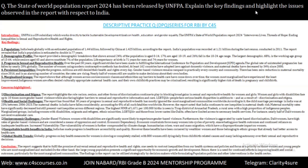The next point is about progress in sexual and reproductive health. Over the past 30 years, India and countries across the globe have made significant strides. The global rate of unintended pregnancies has fallen by nearly 20 percent globally, and the number of women using modern contraceptive methods has doubled. A large number of countries have adopted laws against domestic violence, and maternal deaths have decreased by 34 percent since 2000.